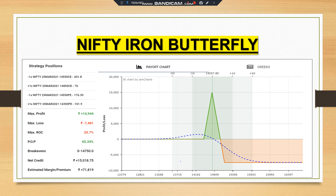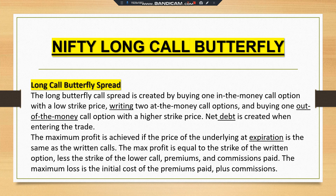Long call butterfly spread is created by buying one in-the-money call option with a low strike price, writing two at-the-money call options, and buying one out-of-the-money call option with a higher strike price. A net debit is created when entering the trade. Maximum profit is achieved if the price of the underlying at expiration is at the same level as the written calls. Maximum profit equals the strike of the written options less the strike of the lower calls minus premiums and commissions paid. Maximum loss is the initial cost of premiums paid plus commissions.